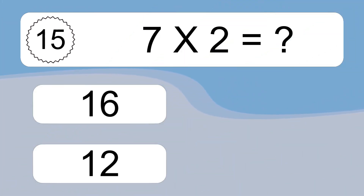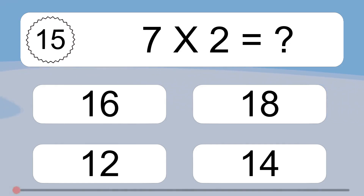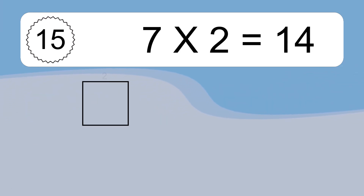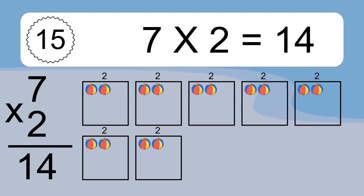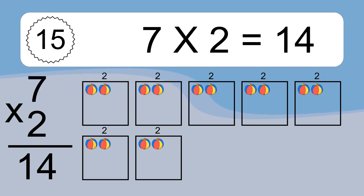7 times 2 equals what? 7 times 2 equals 14. We have 7 boxes, and each box has 2 colorful balls inside. If you count all the balls in all the boxes together, you will have 7 times 2 balls. This equals 14 balls.